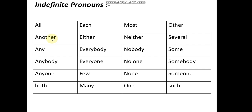Look at the examples of indefinite pronouns so that you can easily find them in sentences. The indefinite pronouns are: all, another, any, anybody, anyone, both, each, either, everybody, everyone, few, many, most, neither, nobody, no one, none, one, other, several, some, somebody, someone, such. All these are indefinite pronouns.